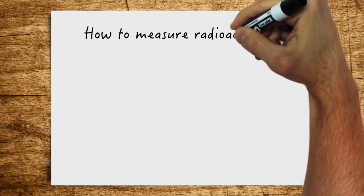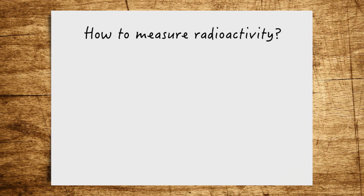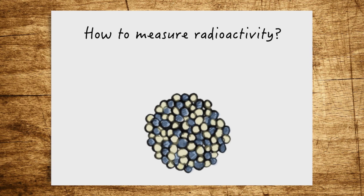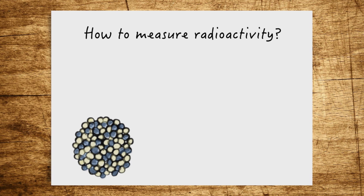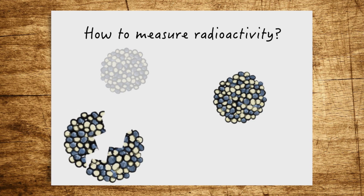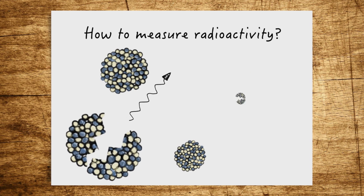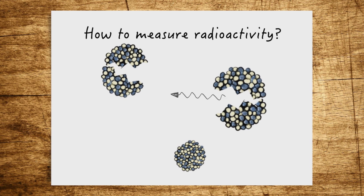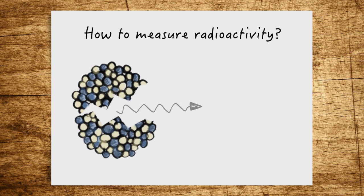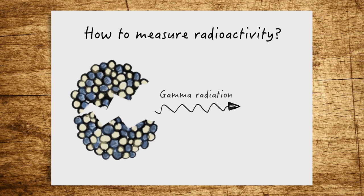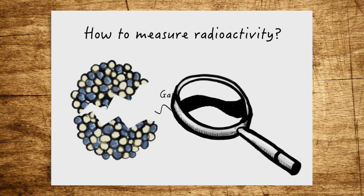How is the activity of a radioactive substance actually measured? Since you cannot see the decay of atomic nuclei and thus cannot count it, the radiation that is emitted with each decay is measured. From this, the number of decays can be deduced. Let's, for example, look at substances that emit gamma radiation during decay.